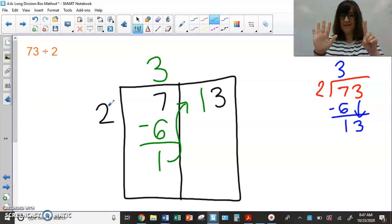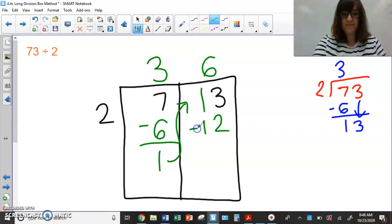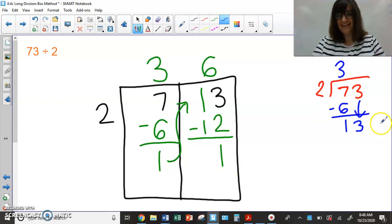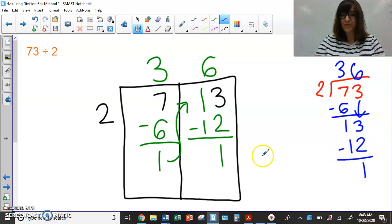How close can I get without going over? So let's skip count by twos. Two, four, six, eight, ten, twelve, fourteen. Uh-oh, too big. So I go back to 12, which is six, right? So two goes into 13 six times without going over. Six times two is 12 because that's what I stopped counting at. So I'm going to subtract 13 minus 12, and I'm going to get one. If you had done it over here, you would have said two goes into 13 six times. Six times two is 12. I subtract, and I get one.